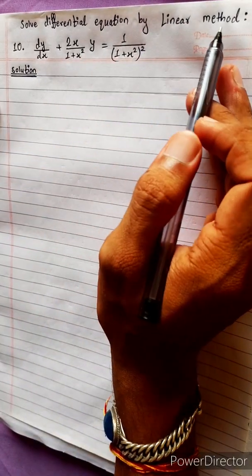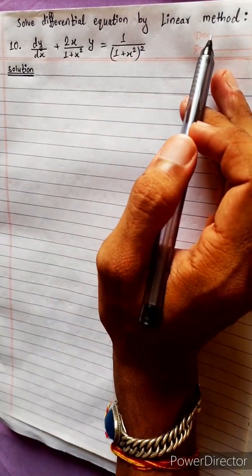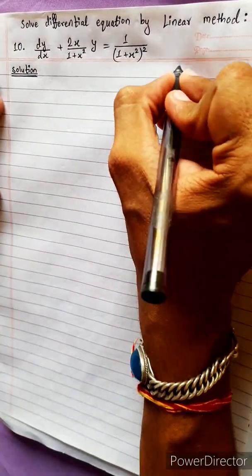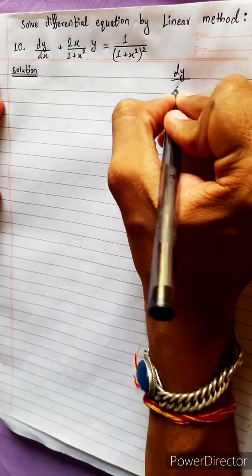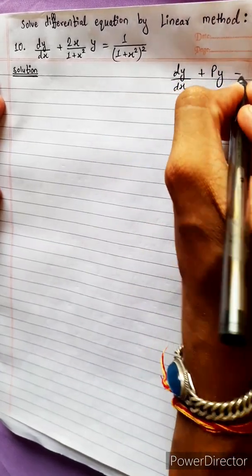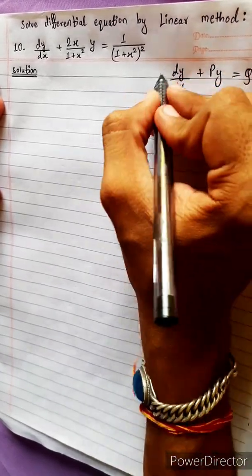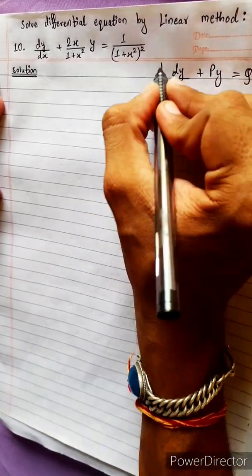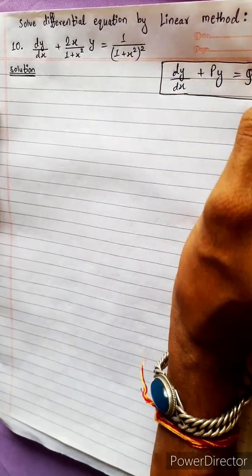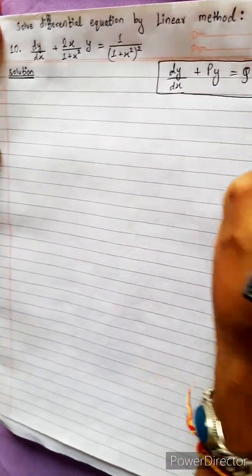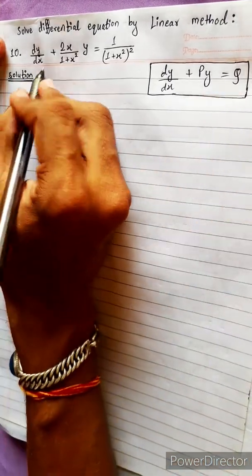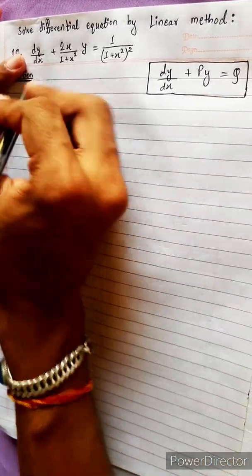Solve differential equation by linear method. This is my standard form: dy/dx plus P·y equals Q, where P and Q are functions of x and do not contain y.